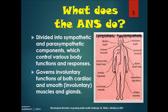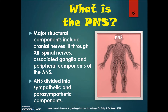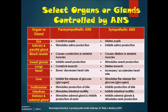The autonomic nervous system governs involuntary functions of both cardiac and smooth muscles and glands. The peripheral nervous system's major structural components include cranial nerves three through twelve, spinal nerves, associated ganglia, and peripheral components of the ANS. In this chart we see select organs and glands controlled by the autonomic nervous system — one division stimulates production while the other decreases or inhibits it.